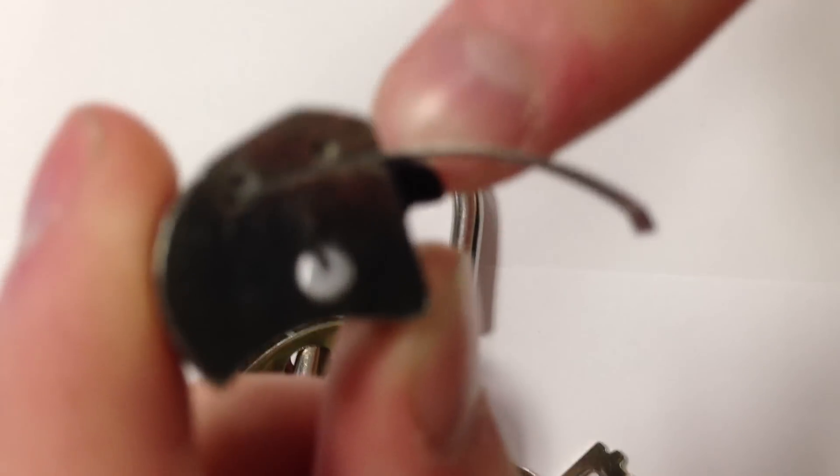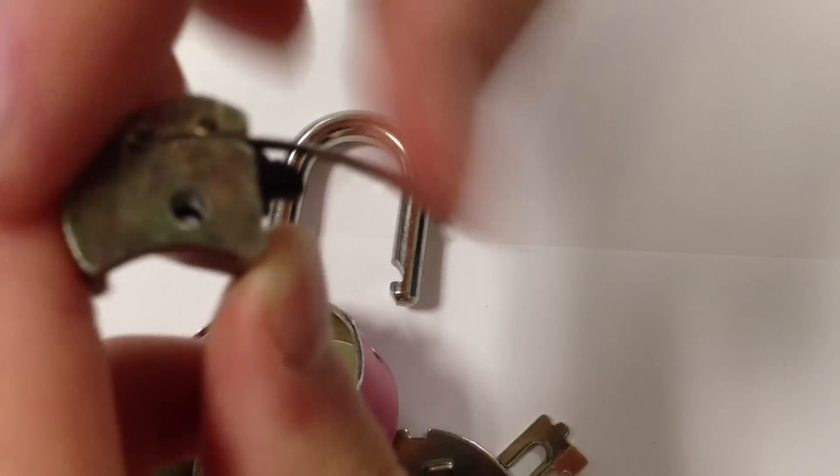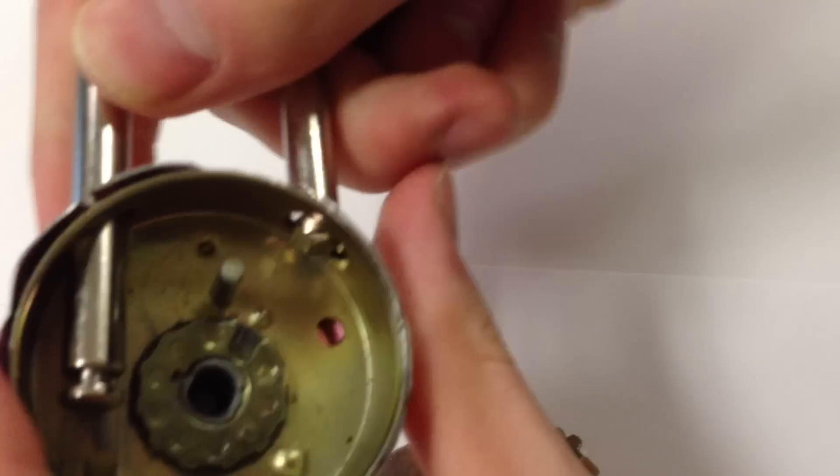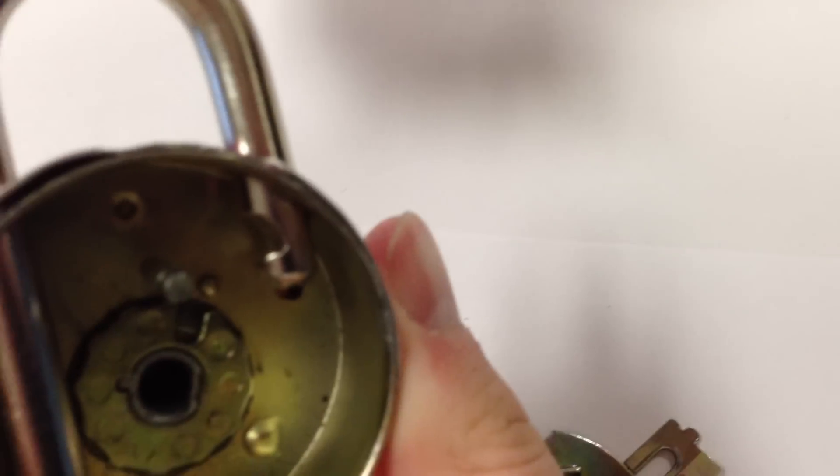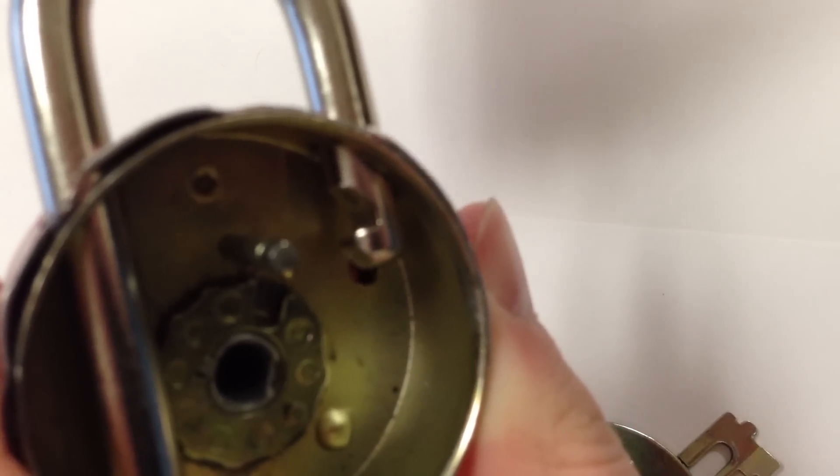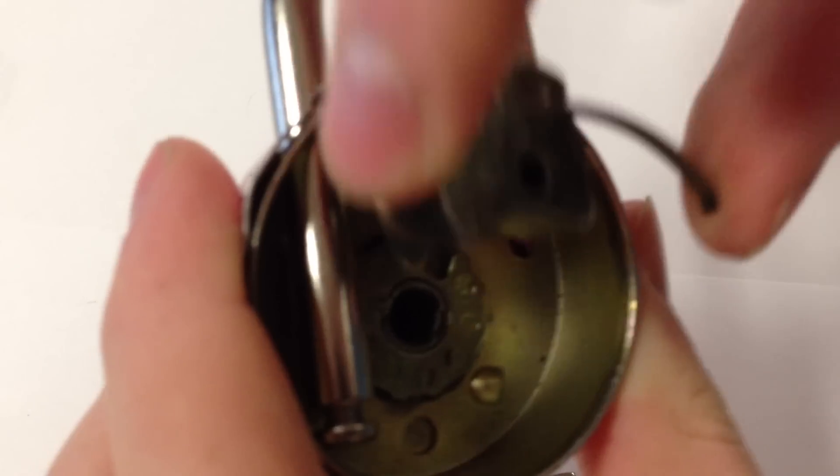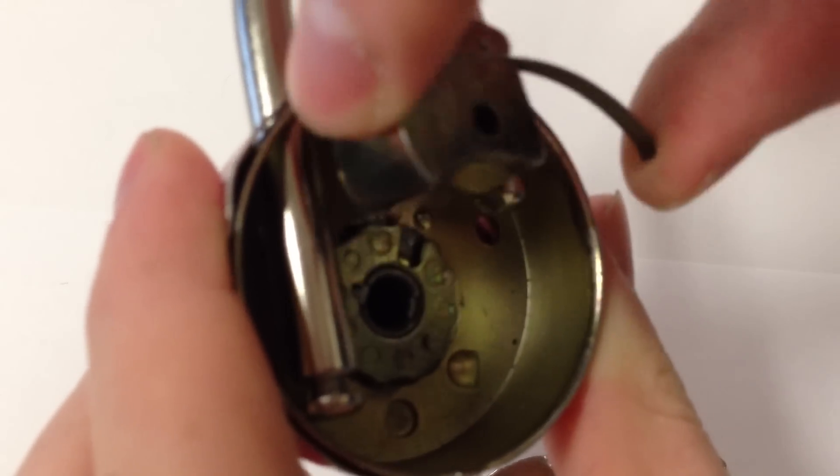you see this black plastic piece, which is called the locking latch. When placed correctly, the locking latch should place right into that little groove of the shackle, which kind of turns them both as one.